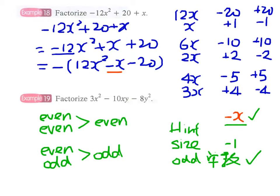So we can now cross out all those pairs of factors which are both even numbers. 6x and 2x—they are both even numbers; they won't cross multiply to get an odd number. Again, -10 and +2—both even numbers. And +10 and -2—both even numbers.